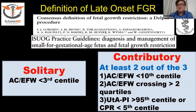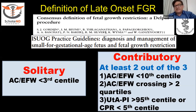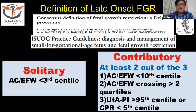What do you mean by crossing two quartiles? One quartile is 25%. So two quartiles means a 50th percentile drop. For example, if a baby drops from the 80th centile down to the 30th centile, it has crossed two quartiles.